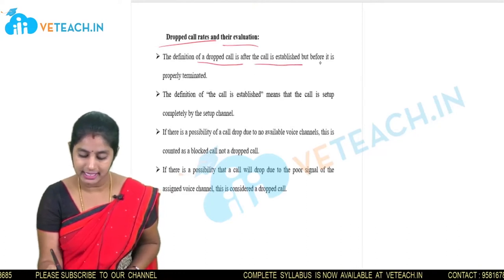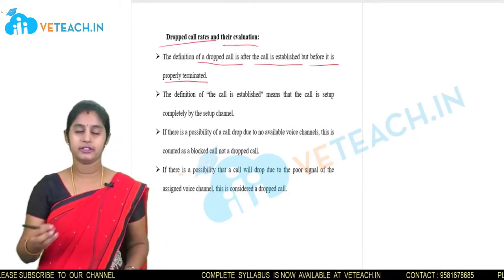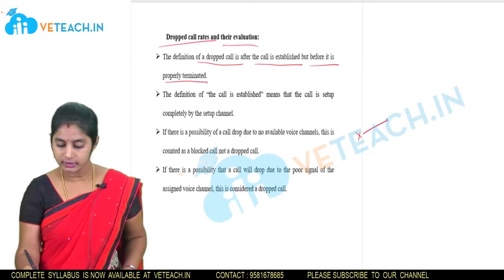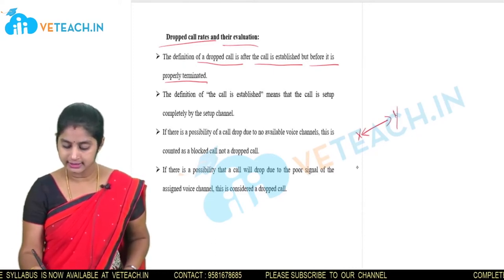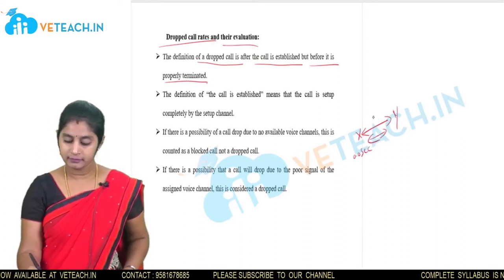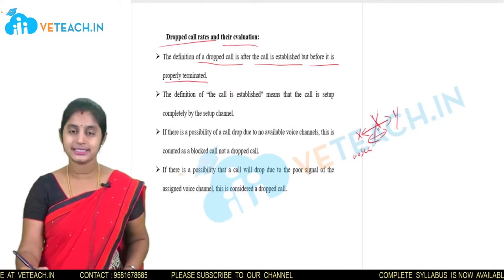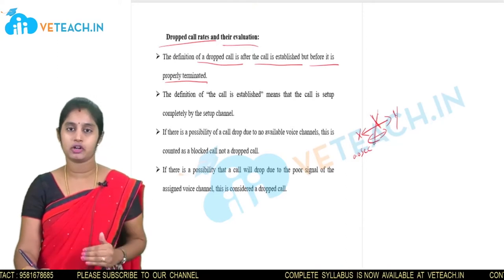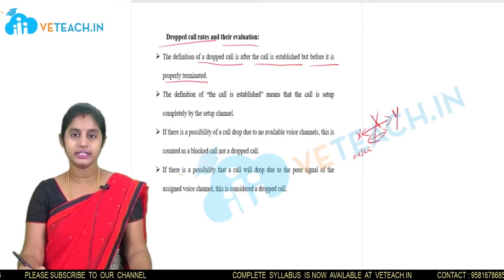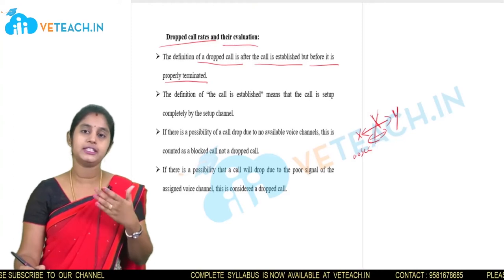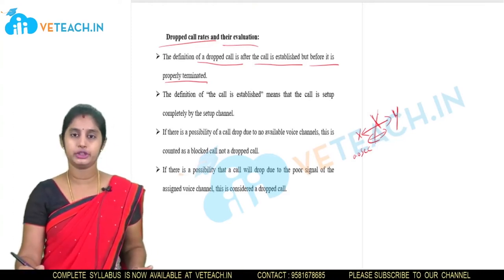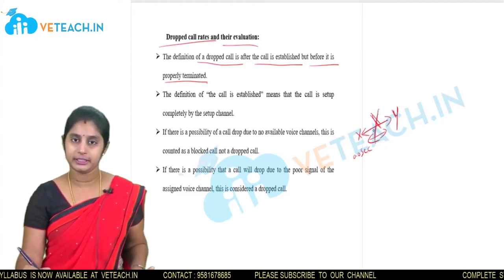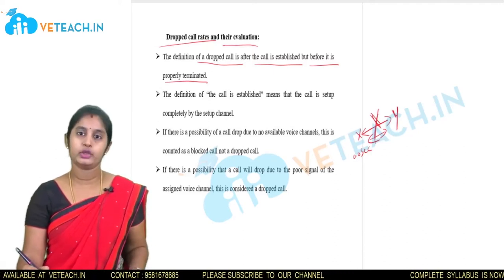The definition of a dropped call rate is: after the call is established but before it is properly terminated, the call drops mid-conversation. For example, if X is in conversation with Y and the call is disconnected in between — without either subscriber intentionally disconnecting — that is a dropped call. Due to technical issues or weaker signals, the conversation is not completed.